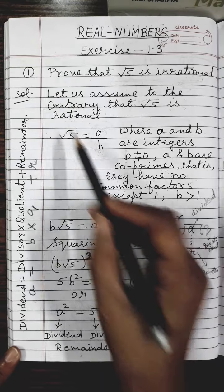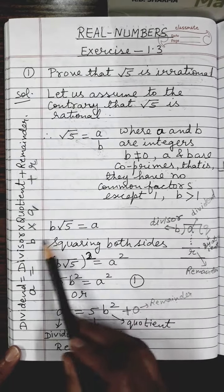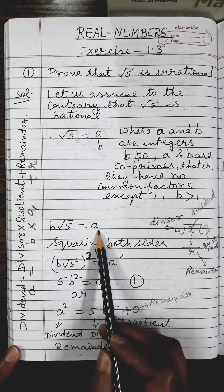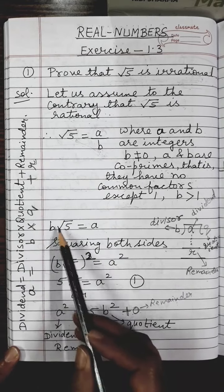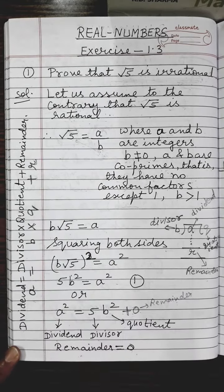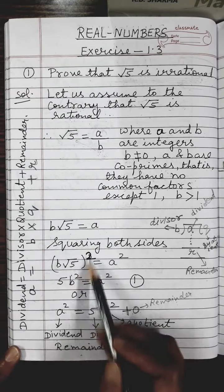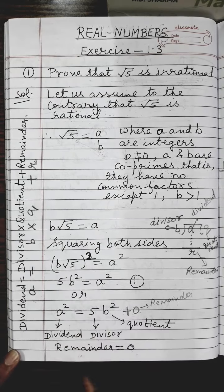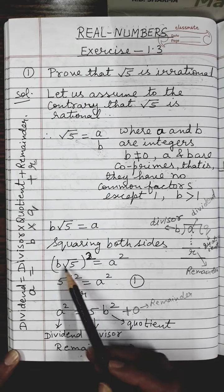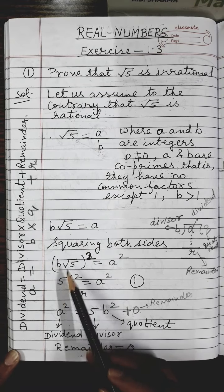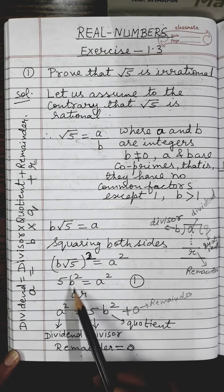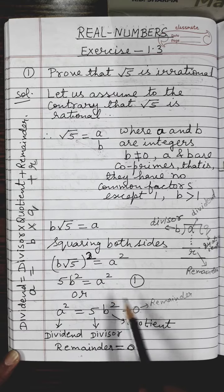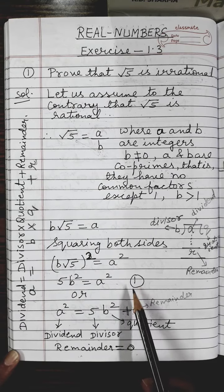Next, I will cross multiply, so b will go to the left side: b root 5 equals a. Then I will square both sides in order to remove the square root from 5. Squaring gives: (b root 5)² = a², which becomes 5b² = a². This is expression one. Reversing sides, a² = 5b².